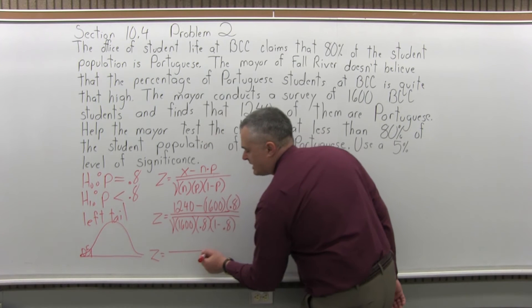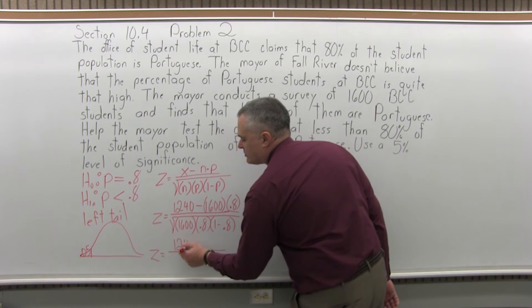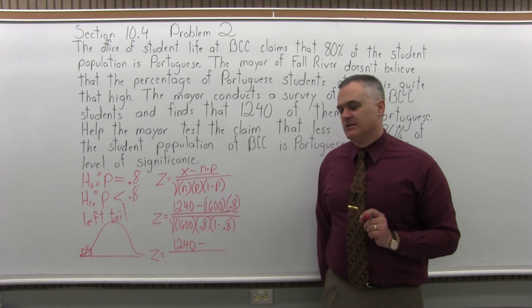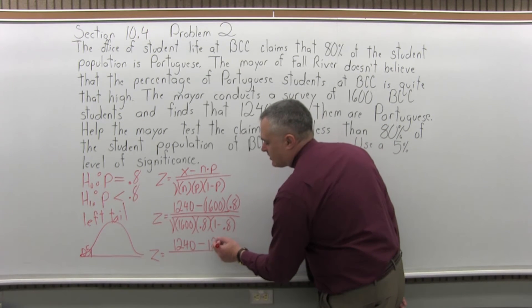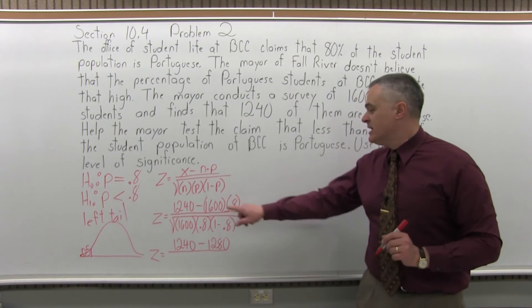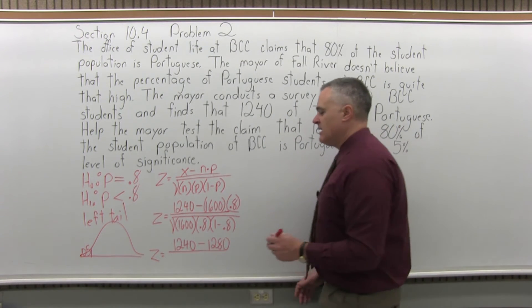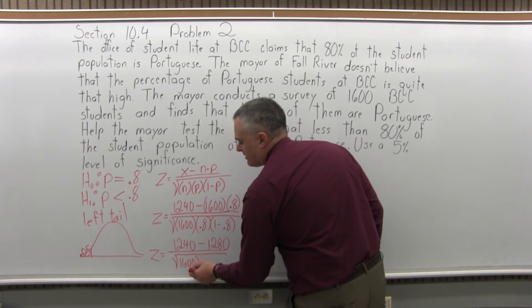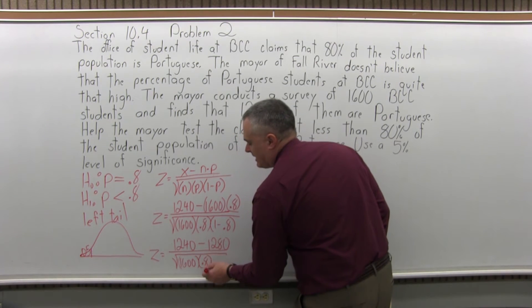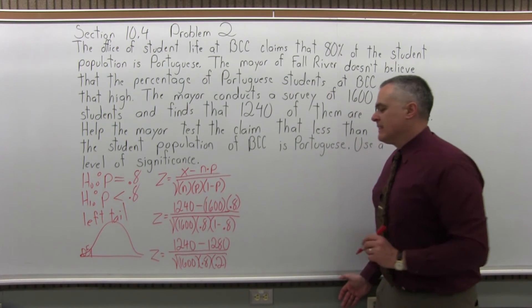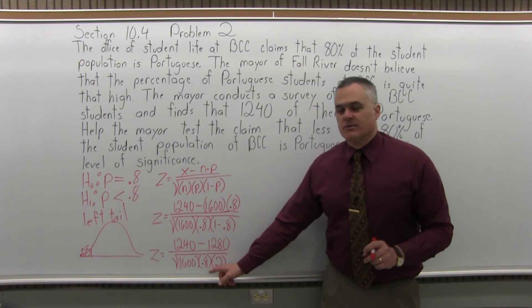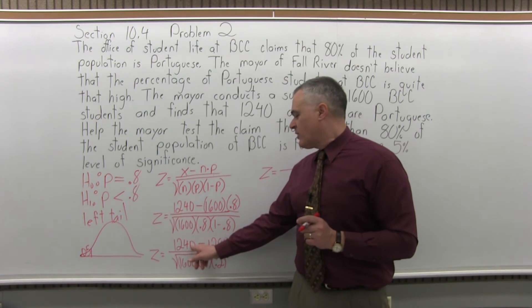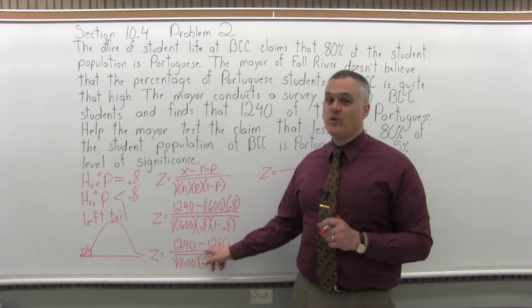So z equals, in the numerator, I'll have 1,240 minus 1,600 times 0.8. You might need to do that on a calculator. It comes out to 1,280. That's the result of 1,600 times 0.8. Let me simplify the square root a little bit more before I come down to one number. It will be 1,600 for the n, 0.8 for the p, 1 minus 0.8 is 0.2. So now I can multiply out all those numbers into the square root. The next part of the process, I will have z equals, in the numerator, 1,240 minus 1,280 is negative 40. Pay attention to the sign. The sign is very important.